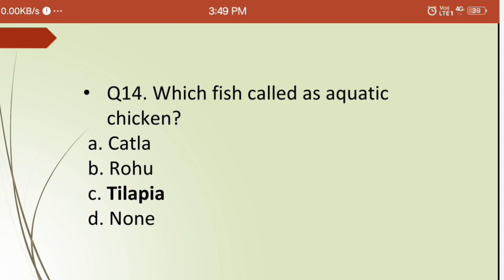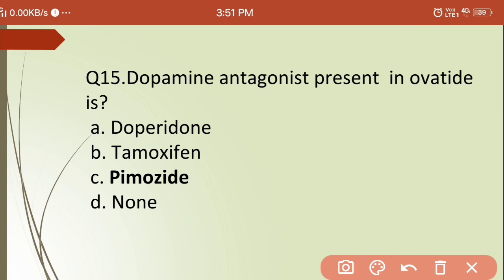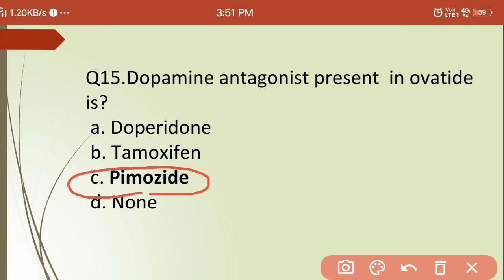Fifteenth question: which dopamine antagonist is present in Ovaprim? Options are: (a) domperidone, (b) tamoxifen, (c) pimozide, (d) none of these. The correct answer is (c) pimozide — pimozide is the dopamine antagonist present in Ovaprim, which is a hormone used for artificial breeding of fishes.